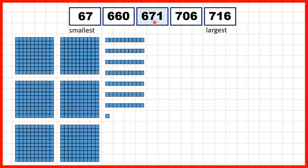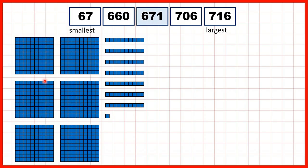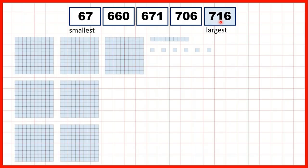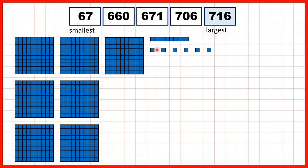Then 671, so six hundreds, seven tens, and one one. Then we had 706, so seven hundreds and six ones. And then our largest number was 716, so seven hundreds, one ten, and six ones.